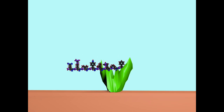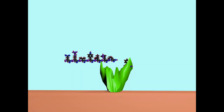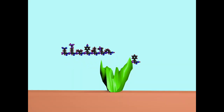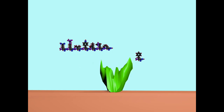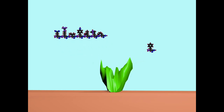Angiotensin-converting enzyme 2 is a carboxypeptidase. It takes the 8-amino acid peptide angiotensin-2 and breaks off the terminal phenylalanine to convert it into angiotensin-1-7, which promotes vasodilation, releasing an excess phenylalanine.